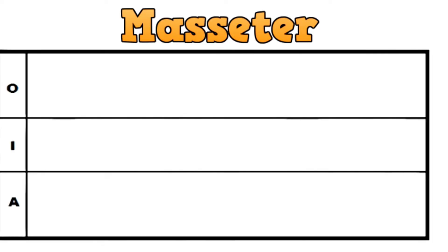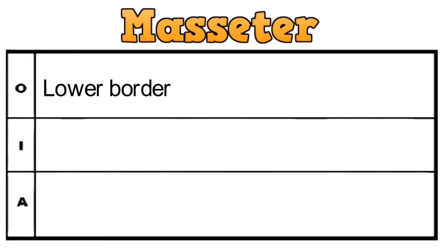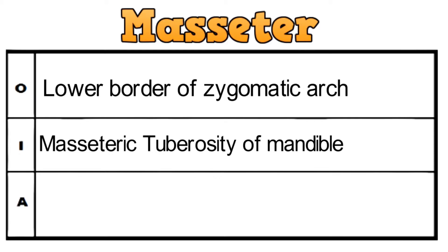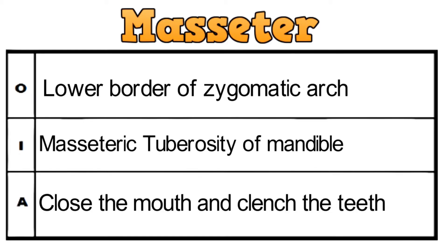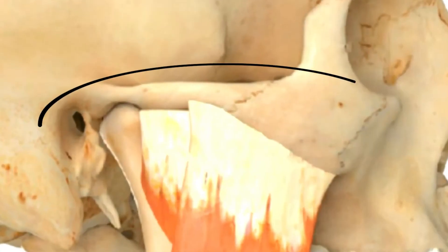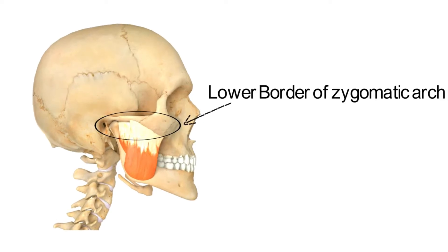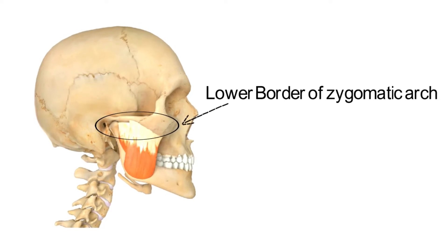The next muscle is the masseter. It originates from the lower border of the zygomatic arc and gets inserted in the masseteric tuberosity of the mandible. The action of the muscle is to close the mouth and clench the teeth. So this is the point of origin of the muscle, that is the lower border of the zygomatic arc, and this is the masseter muscle.